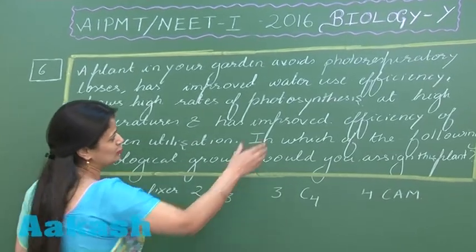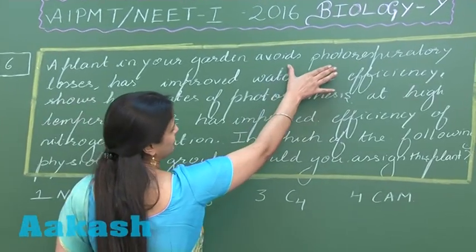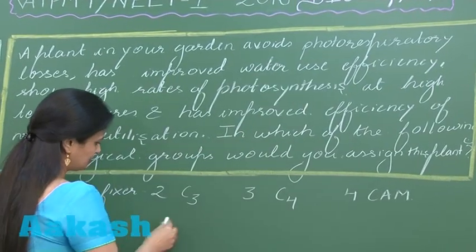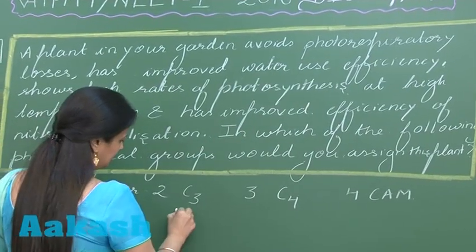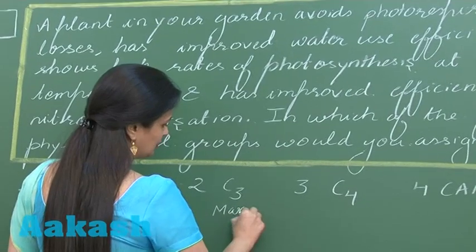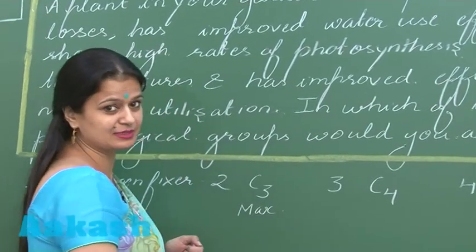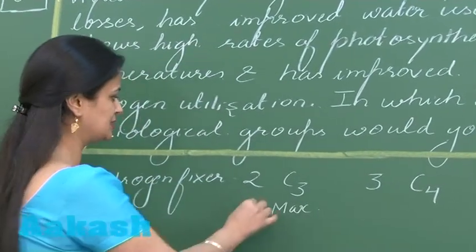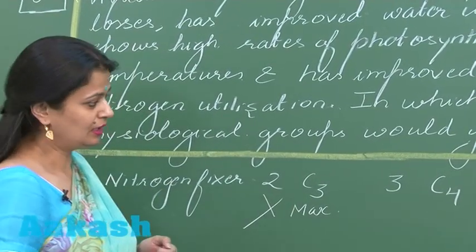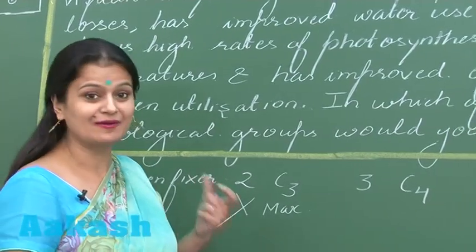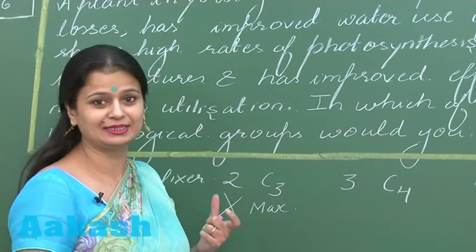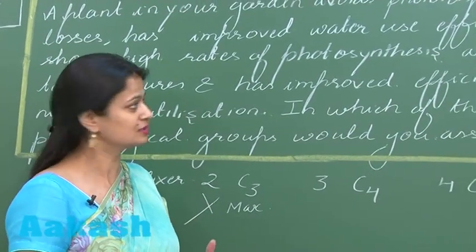Let's look first at the photorespiratory loss. In the case of C3 plants, the photorespiratory loss is maximum, so this is out of the scenario. Now we have to choose the right option from C4 and CAM plants.